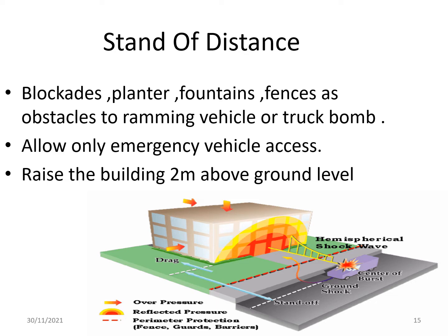Blockades such as planters, fountains, and fences are used as obstacles to restrain vehicles or a truck bomb. Only emergency vehicle access is allowed. The building is raised two meters above ground level, as shown in the diagram.